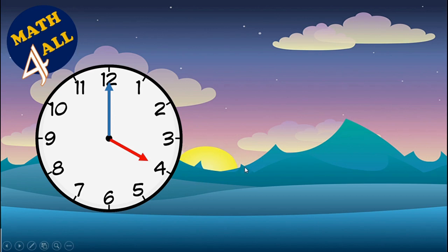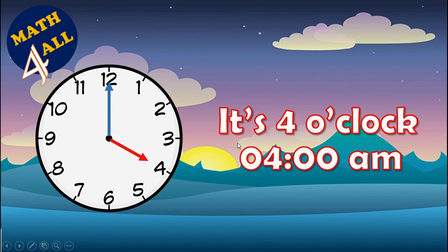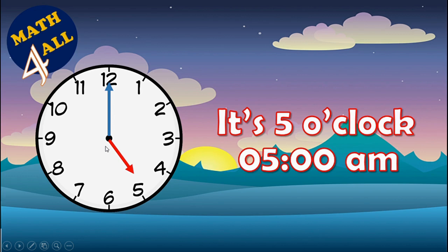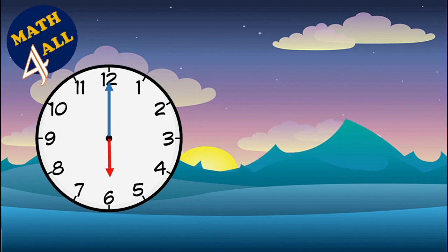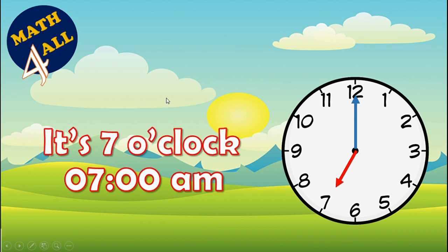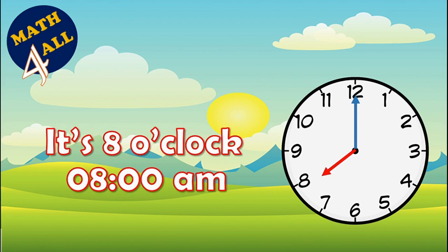The sun is starting to rise — now it's four o'clock. After four, the short hand moves to five: five o'clock, five AM. Can you read this? The short hand is on six and the long hand is on twelve, so it's six o'clock. Good morning — the sun has risen! It's seven o'clock, seven AM.